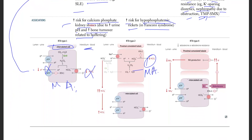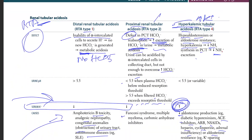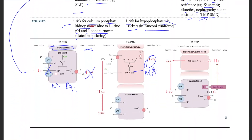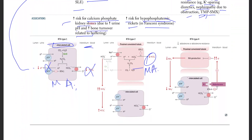The primary defect is in aldosterone. When aldosterone is absent or ineffective, NH3 production is impaired and potassium cannot be excreted by the intercalated cells, causing hyperkalemia.